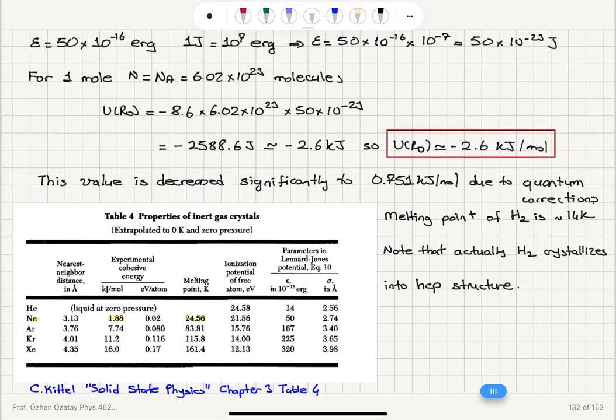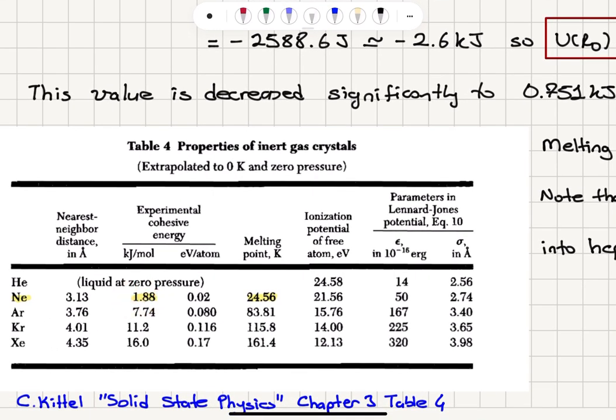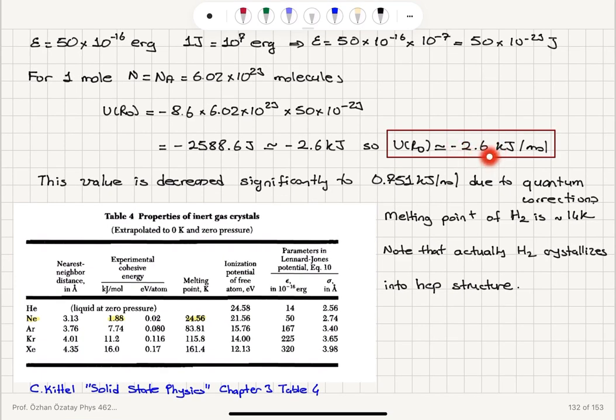Hydrogen's melting point is 14 K. The melting point of neon is higher, so it should have higher cohesive energy, whereas we calculated 2.6 kJ/mol for hydrogen. This reflects that hydrogen's value is reduced due to quantum corrections.